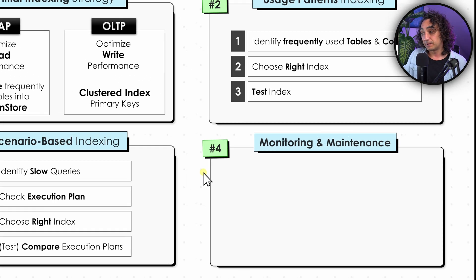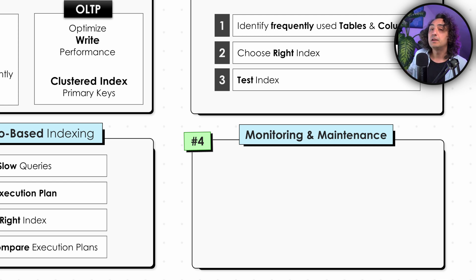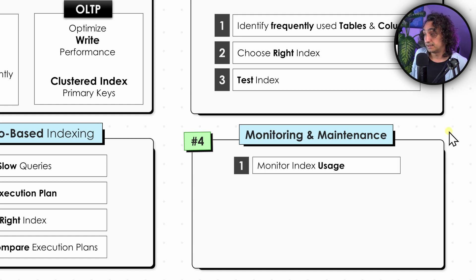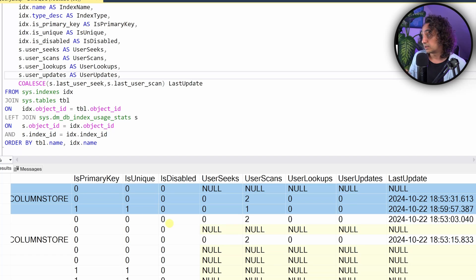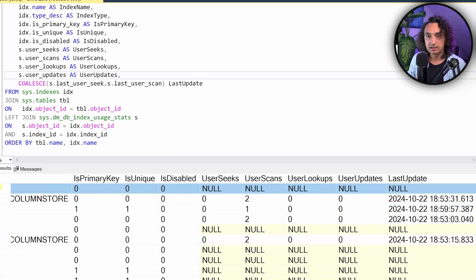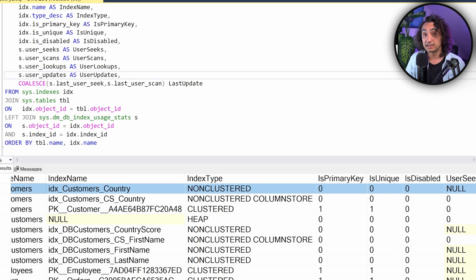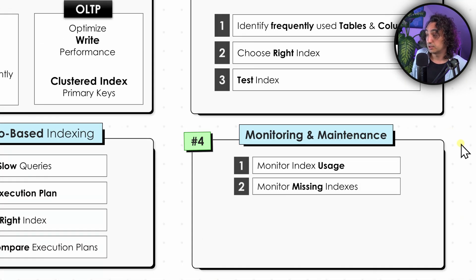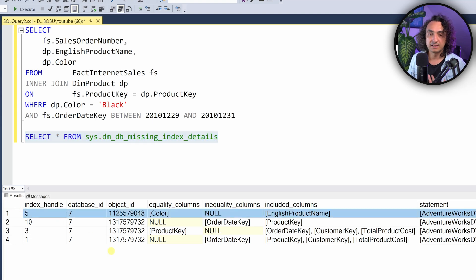The last phase is monitoring and maintenance of indexes. The job doesn't stop after creating and implementing indexes — we have to keep an eye on their health. Databases offer a lot of statistics and metadata you can use here. The first step is to monitor index usage using dynamic management views or functions in the system schema, where you can see how many times each index has been used and when queries last used them. This helps identify indexes that have never been used.